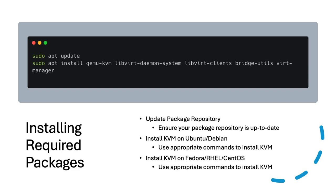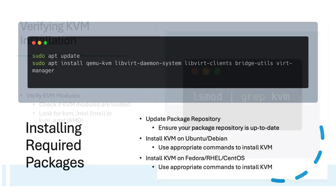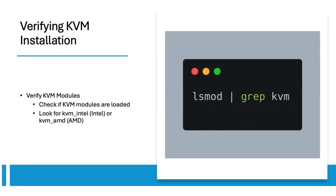To install KVM and necessary tools, first update your package repository. For Ubuntu, Debian, Fedora, RHEL, and CentOS, use the appropriate commands to install KVM. To verify if KVM modules are loaded, check for kvm_intel or kvm_amd for AMD.